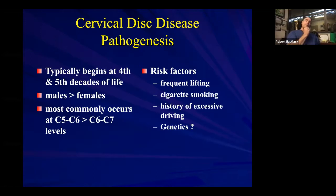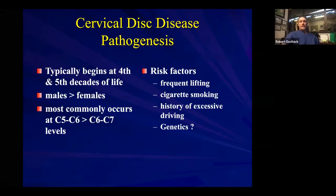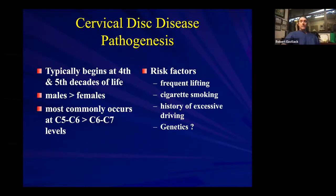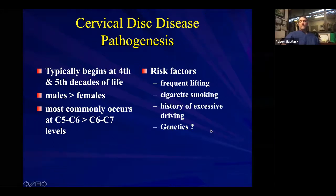Generally speaking, cervical disc disease pathogenesis begins in the fourth and fifth decades of life, but it's a genetically predisposed phenomenon and you will see late teens and 20-year-olds develop some of this based on genetics. Similarly to the lumbar spine, it has a greater predilection toward males and most commonly begins at C5-6, slightly more so than C6-7. External risk factors include frequent lifting, smoking, excessive driving, and genetics playing a big role.